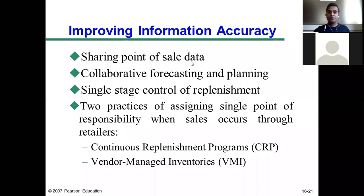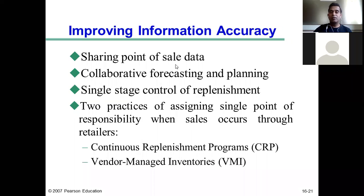The first aspect is sharing point-of-sale data. Using the example of Procter & Gamble and Walmart: point-of-sale data refers to the counter where you pay and check out — the point where sales actually happen inside the store. Every time you go to an organized retail chain and purchase, each product is scanned by a handheld scanner at the sales counter by the customer service executive, and the product-related data is entered into the store's computers.